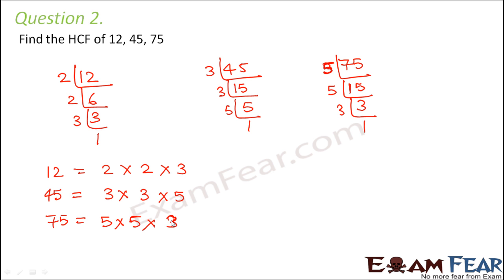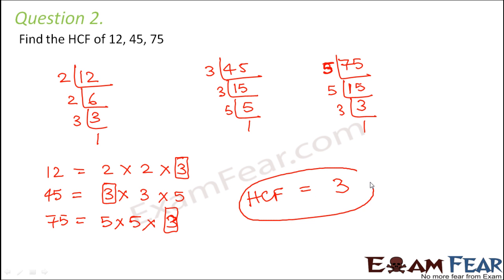This is how we have done the prime factorizations. Now let us find out the common factors — a number should be present in all of them to be common. 2 is not a common factor for all of them. 3 exists in 12, 45, and 75, so 3 is one common factor. 5 is a factor of 45 and 75 but not of 12. So the HCF of 12, 45, and 75 is 3.